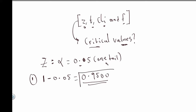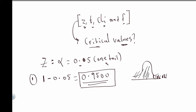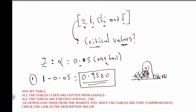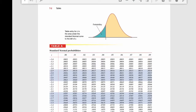We go to the z-table and find this value. We have a bell-shaped curve, and we are finding the area under the curve — the rejection region is on the right. We are looking for the area 0.9500 in the table, and 0.95 will be located somewhere in that range. We find the value, trace it, and get our answer.